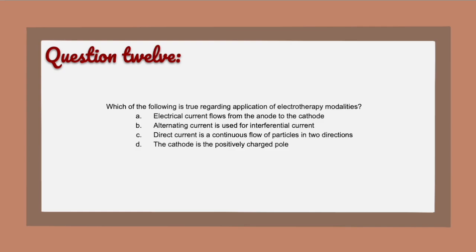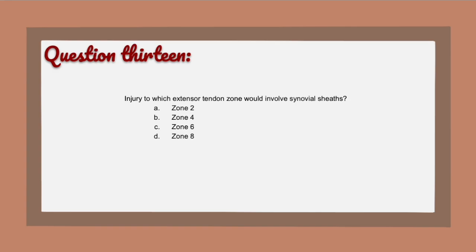Question 12: The correct answer is B — alternating current is used for interferential current. This is a good opportunity to review your PAMs and electrotherapy in particular, as these details are worth knowing for the exam.